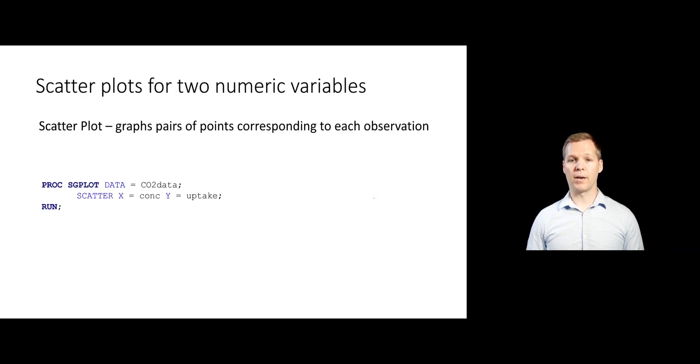Let's start with a plot. So again, all we need to do is use the scatter statement on the SG plot procedure, specify the x and y variables. We're going to use the CO2 data set that we did before that has the uptake on grass, CO2 uptake in grass. And then we also had the concentration, the ambient CO2 temperatures that were measured as well.